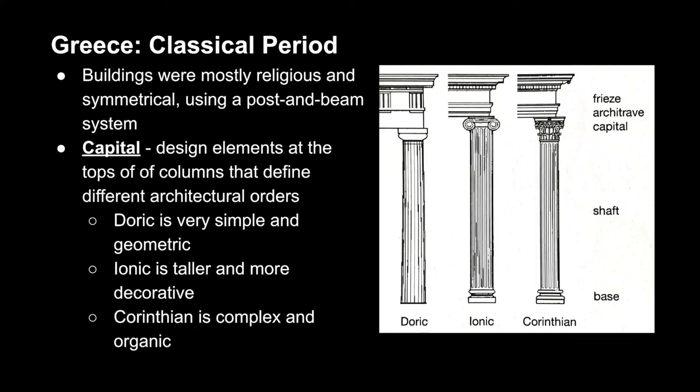Still in the Classical period, but looking at architecture now: buildings were mostly religious and symmetrical, using a post and beam system. In this diagram, we see different kinds of capital — design elements at the top of a column — which define the different architectural orders, of which there are three. First is the Doric, which is very simple and geometric. Next is the Ionic, which is taller and more decorative. And then the Corinthian, which is more complex and organic.